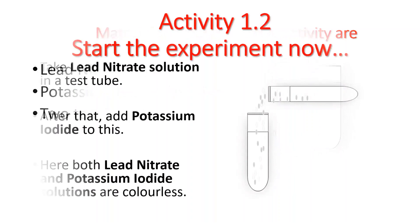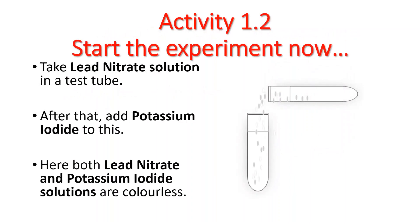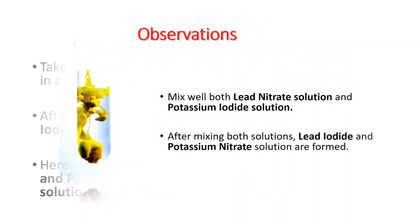Let us start the activity now. First of all, take lead nitrate solution in a test tube and add potassium iodide solution to this test tube. Here both lead nitrate and potassium iodide solutions are colorless. After adding, mix the test tube well.